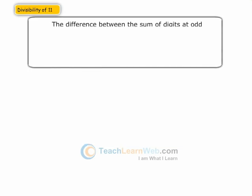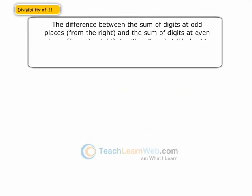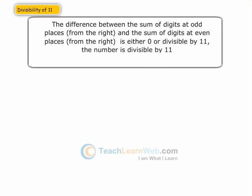The divisibility rule for 11: find the difference between the sum of digits at odd places and the sum of digits at even places of the number. If the difference is either 0 or divisible by 11, then the number is divisible by 11.